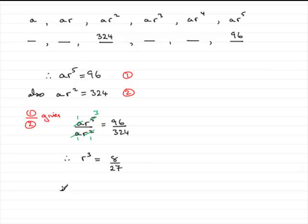So to get R, all we need to do is find the cube root of 8 27ths. And the cube root of 8 27ths, you can either do on a calculator,